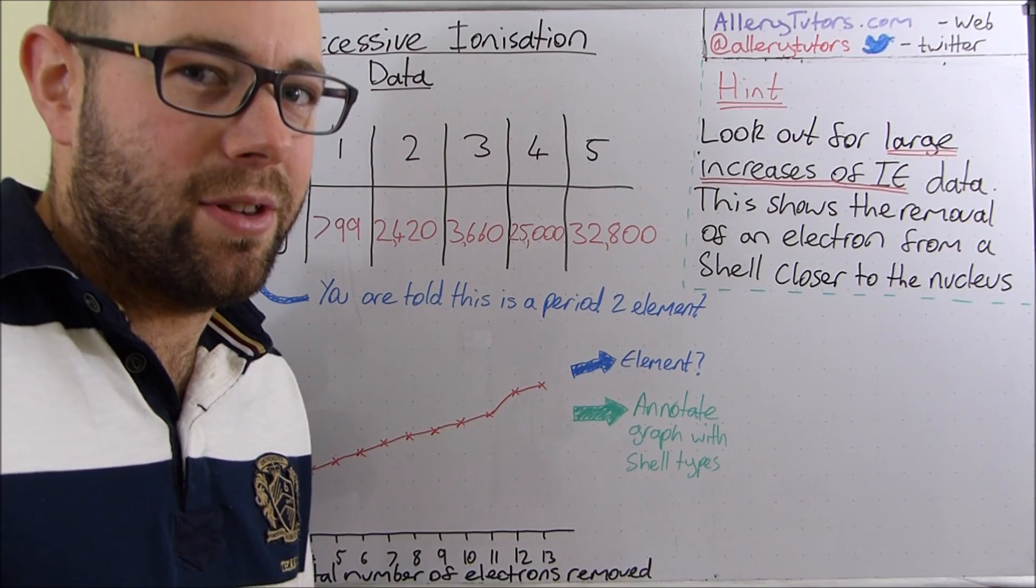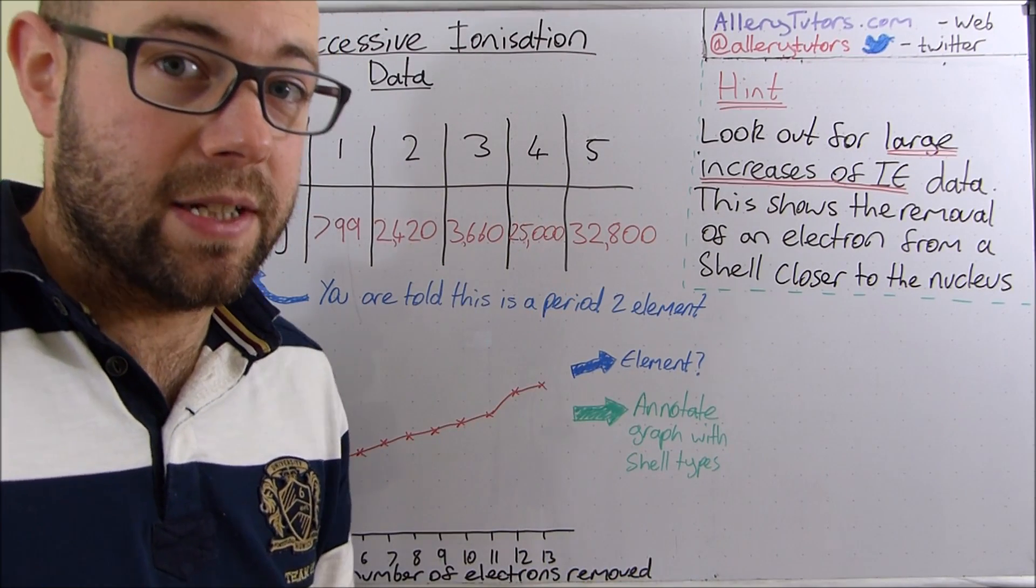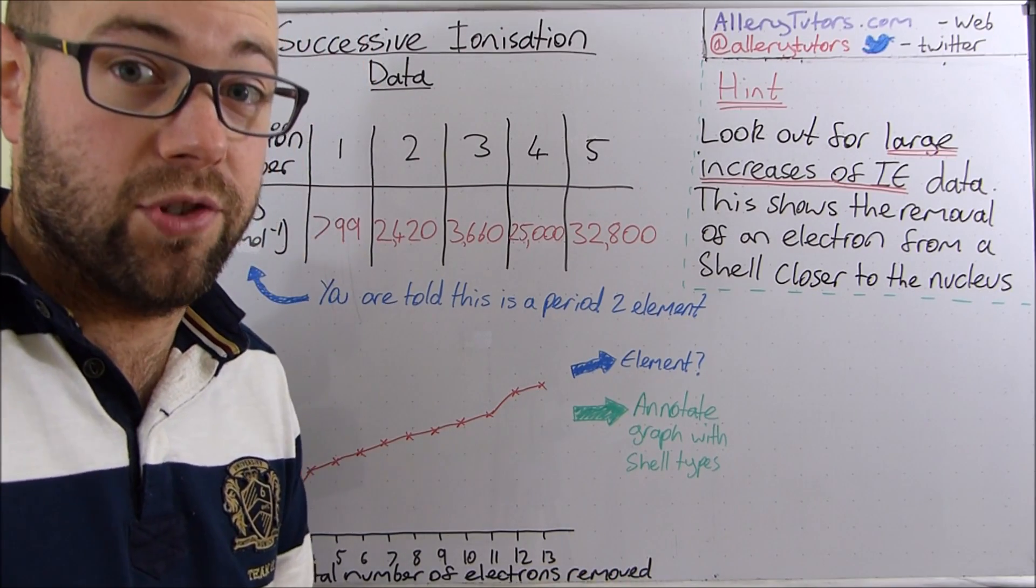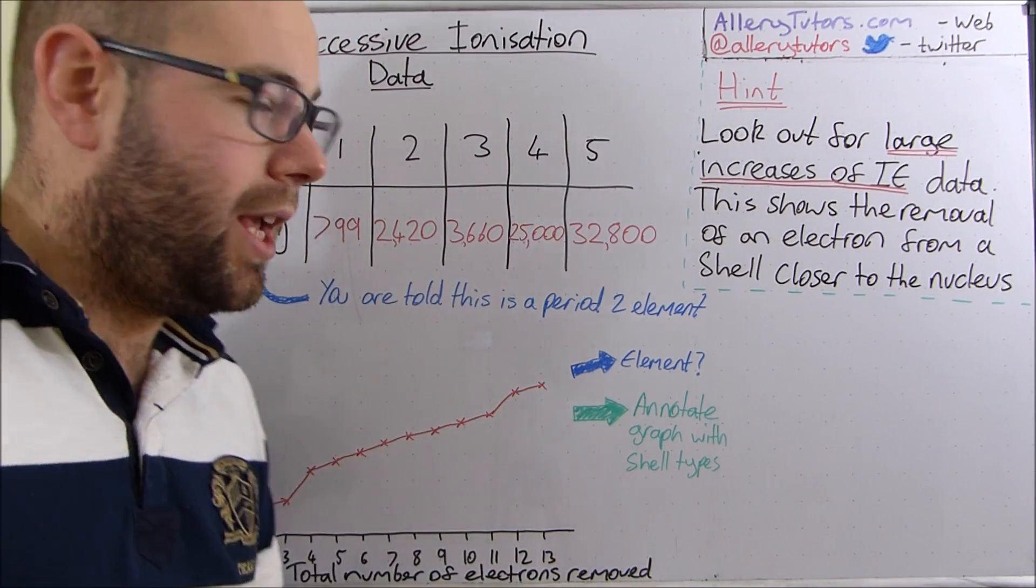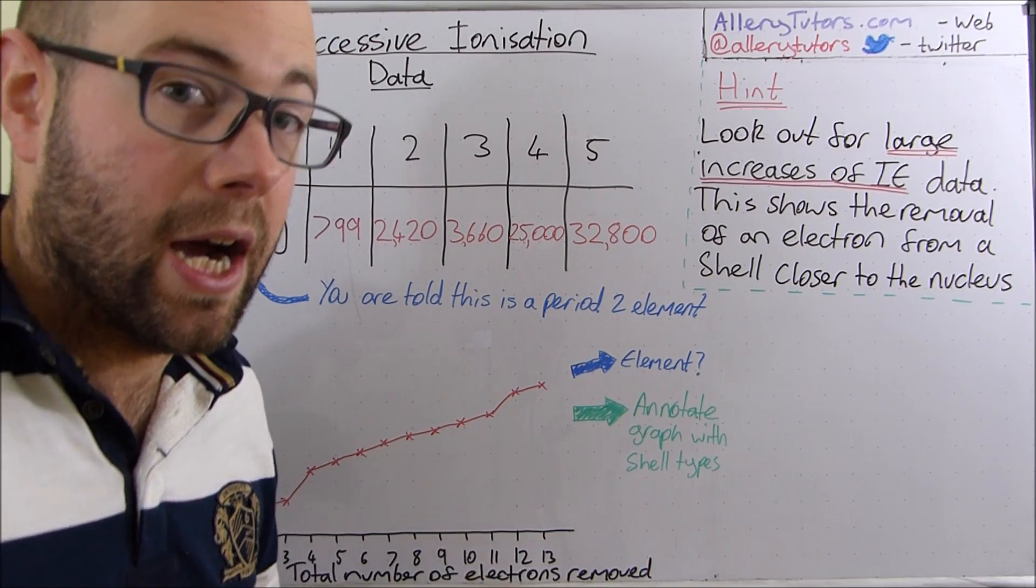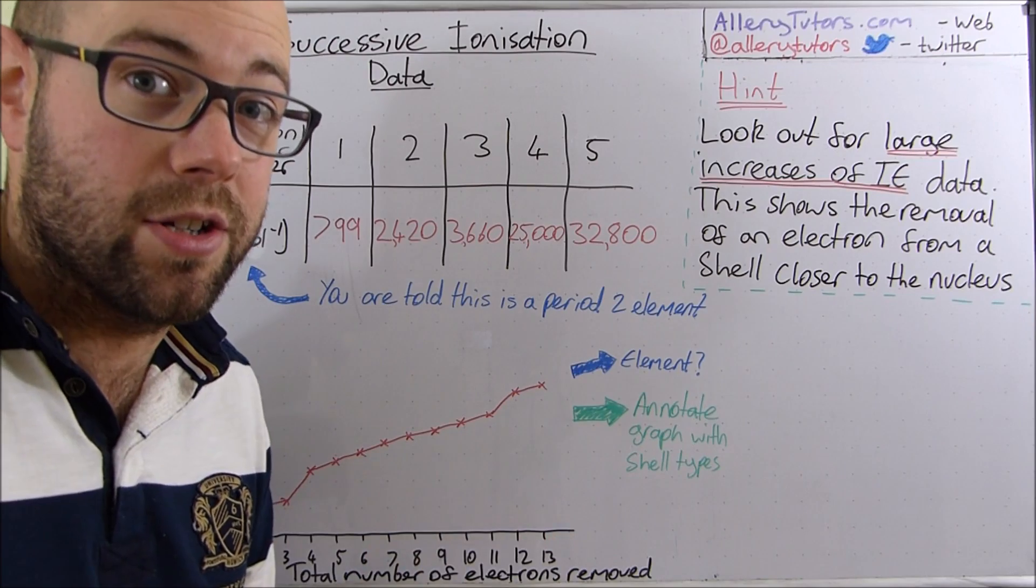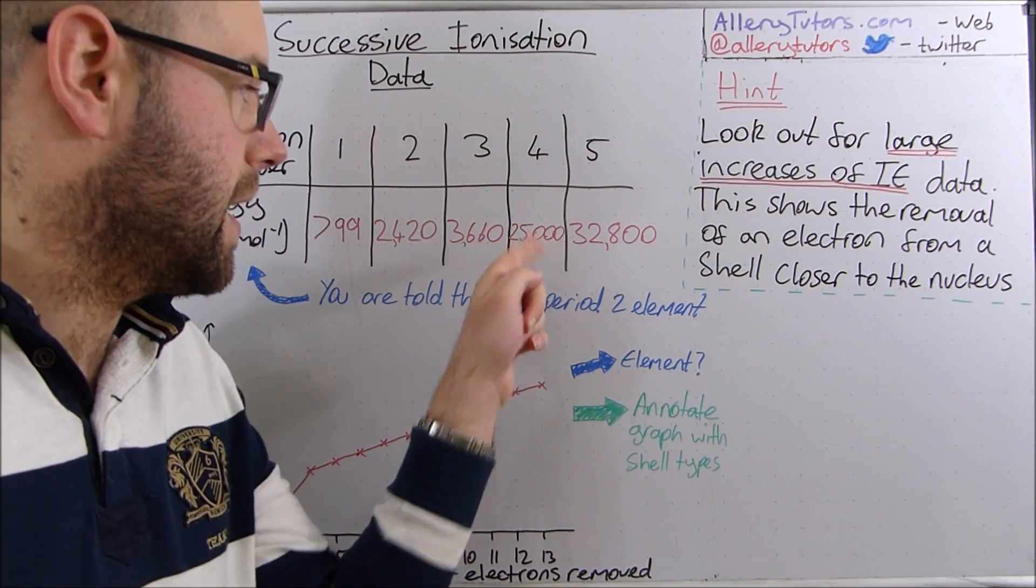This tells you that this fourth electron must be sitting in a shell that's closer to the nucleus. In other words we've gone into a different shell. These first three, yes they are getting higher in energy because we're removing an electron from something that's positively charged, but the big jump is here.